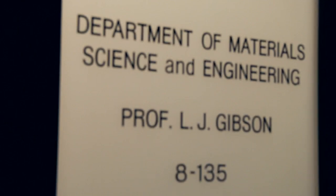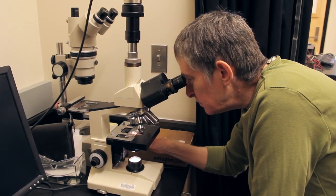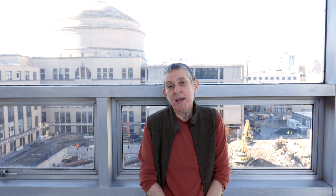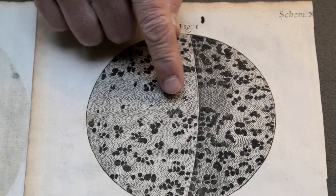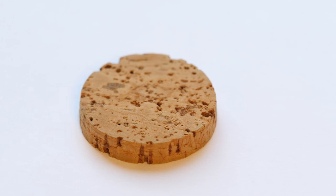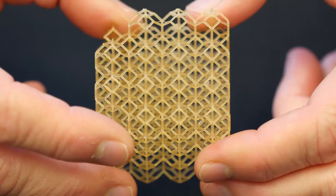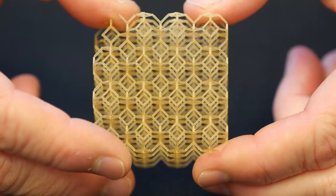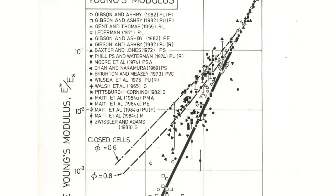I'm Lorna Gibson. I'm a professor of material science and engineering at MIT. I study cellular materials, things like engineering honeycombs and foams, biomedical materials like tissue engineering scaffolds, and plant materials like wood and bamboo and cork. I develop models for the mechanical behavior of these materials and compare the results of the models with experimental test data.